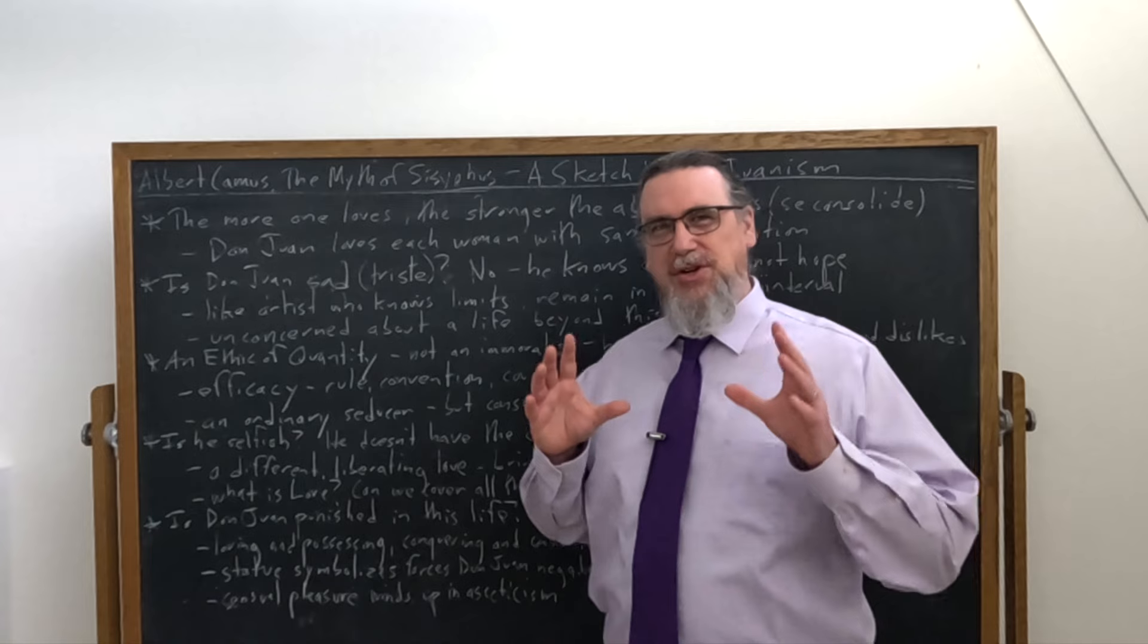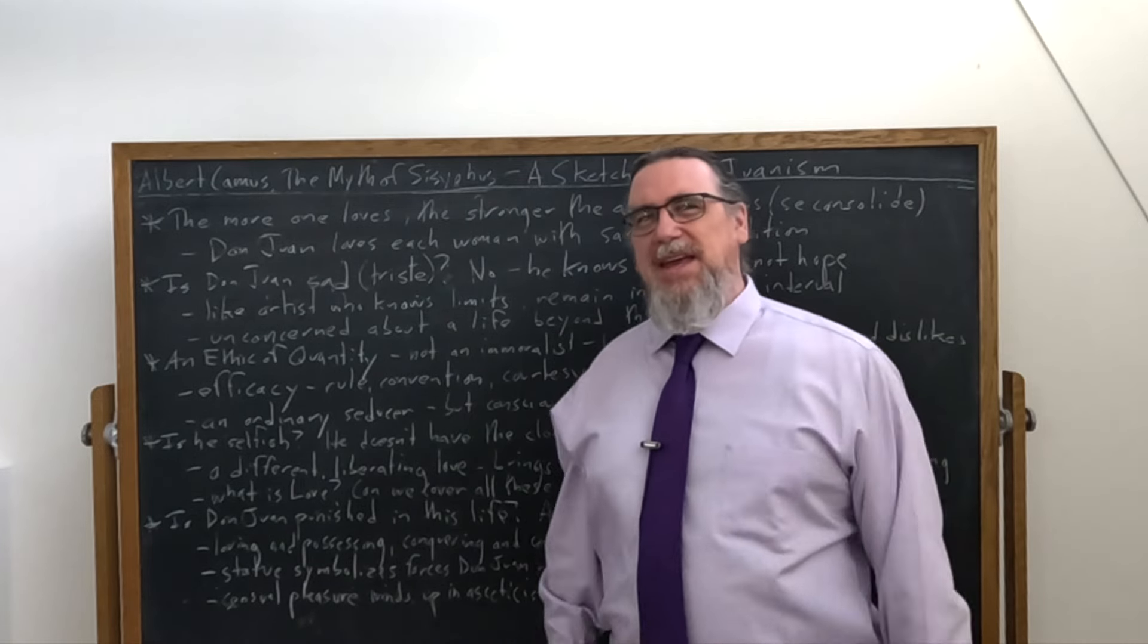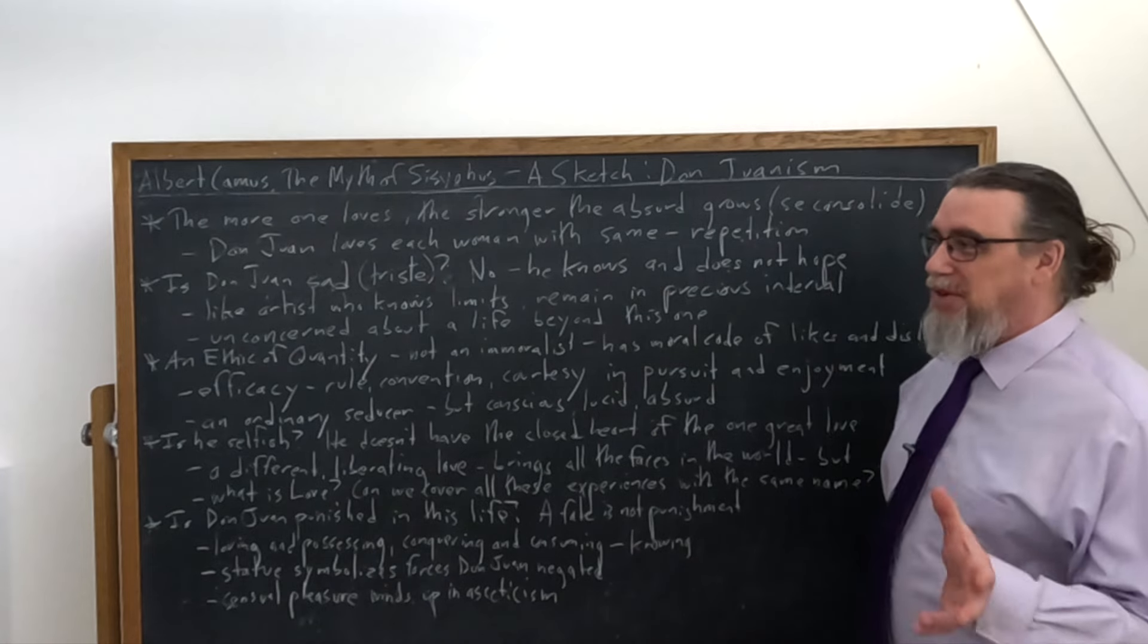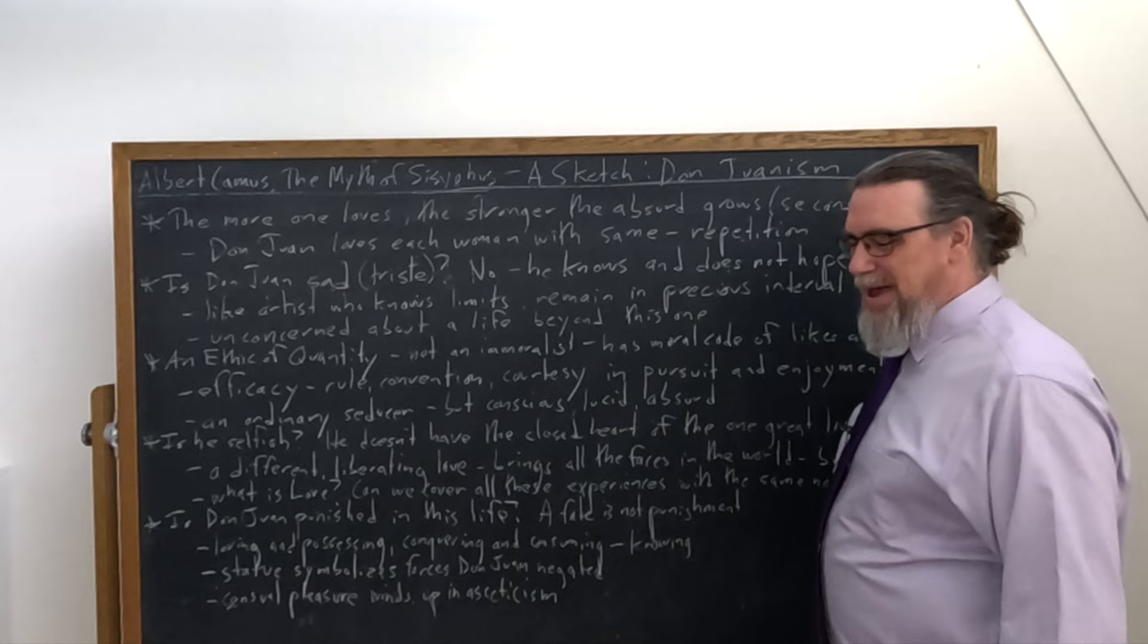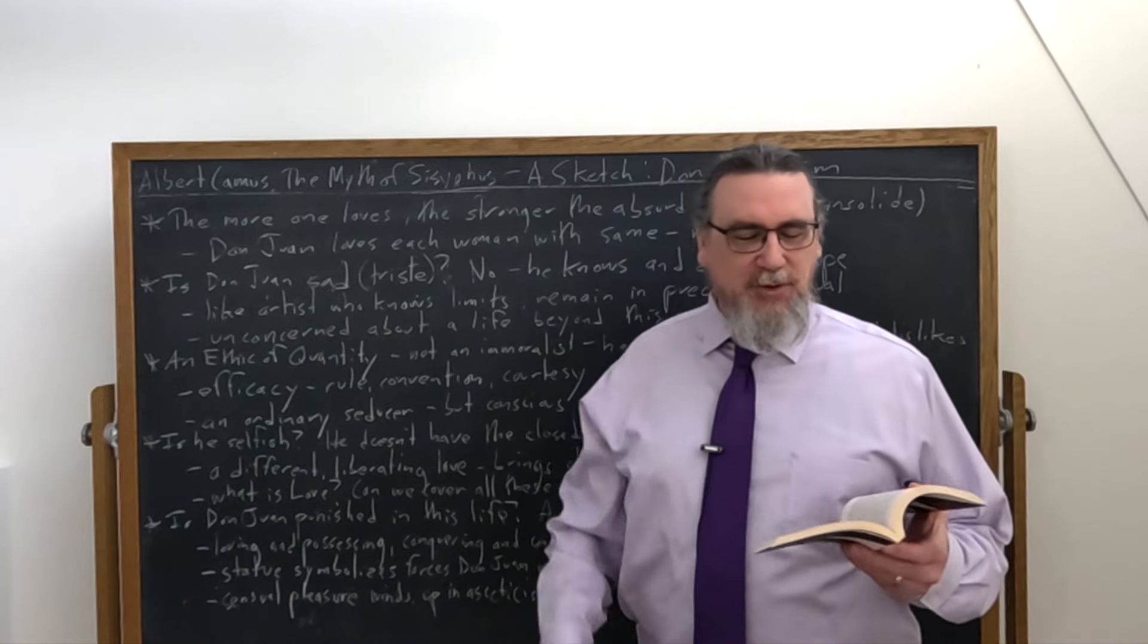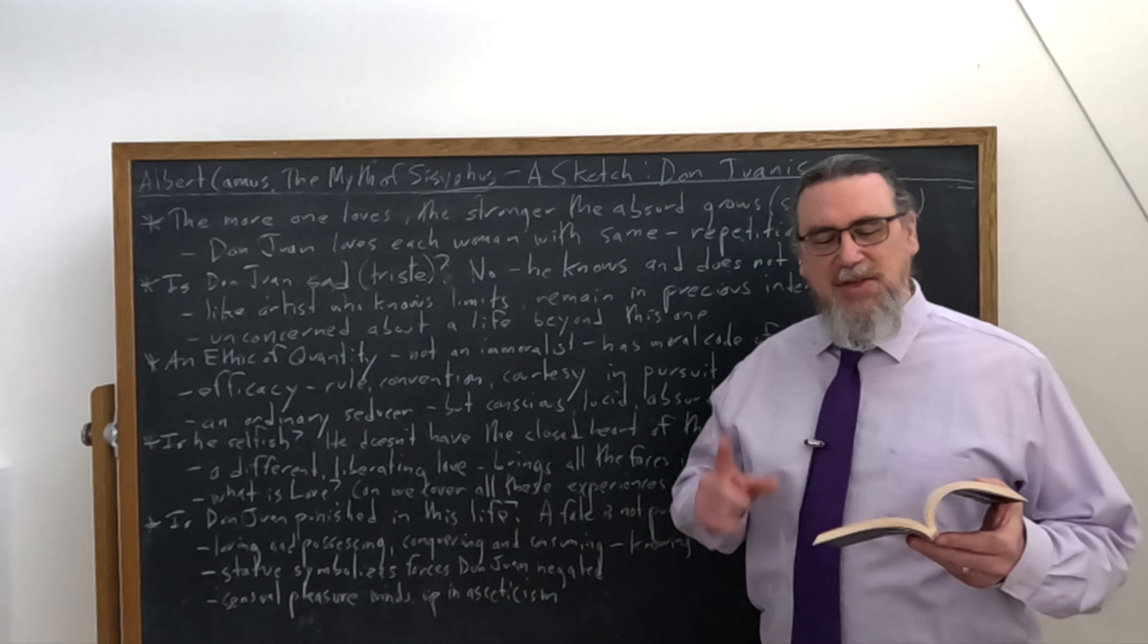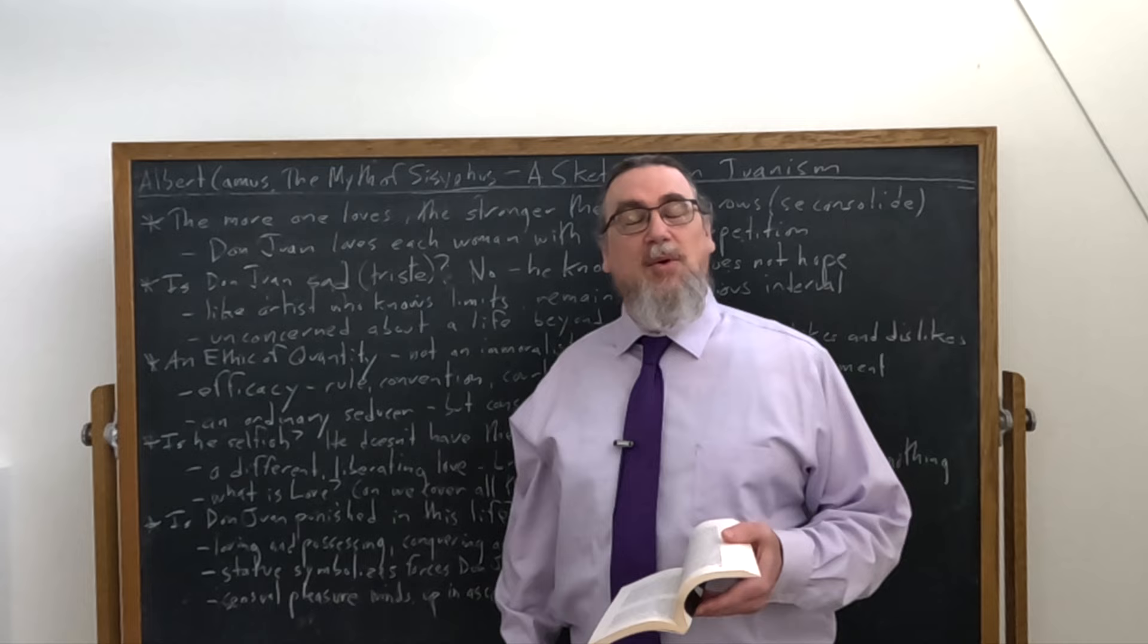So this is a reconstruction on his own part of what he thinks is really key to this quite attractive character, at least attractive to playwrights and people who want to incorporate him. And he starts out with a set of general observations. He says, if it were sufficient to love, things would be too easy. The more one loves, the stronger the absurd goes.